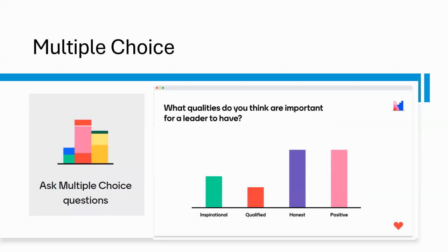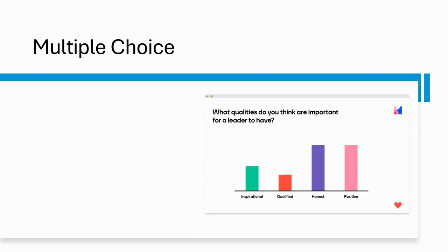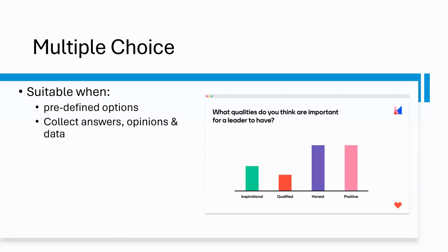The next one is multiple choice. Multiple choice is another popular slide type. It is suitable when you want students to choose from a few predefined options. You can use it to collect answers, thoughts, opinions, and data. Students get to vote on the options and the answers show up in real time.